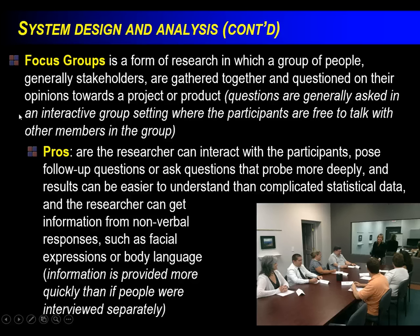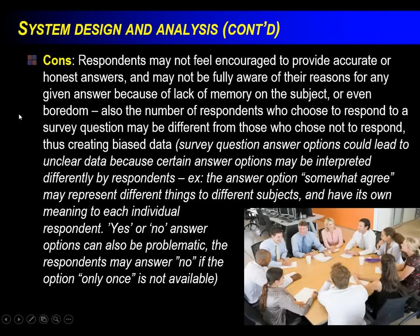In focus groups you can interact with participants, pose questions, and probe more deeply. Sometimes there's a two-way mirror involved — people know what that is — so you can get some facial cues and body language. You need to make sure you have the right people in there. If you only have bosses, you'll get one type of information; if you have clerks, you might get a completely different picture. A con of focus groups is that if your boss is at the table, people may not be willing to say what they really think.